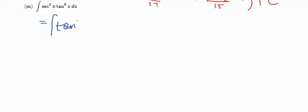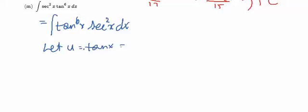It's tan to the 6th x times sec squared x dx, and it's just a simple u substitution. I'm going to let u be tan x, then du becomes sec squared x dx.